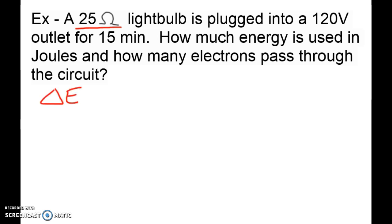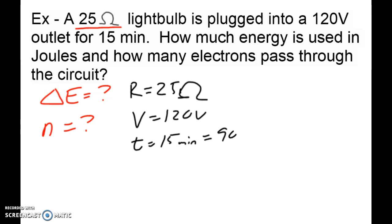If we're looking for energy, that's going to be one of our question marks. And if we're looking for the number of electrons, that's going to be another equation. So let's see what we do know. We do know that our resistance in this case is 25 ohms. We know our voltage here is 120 volts. And we know our time here is 15 minutes. Now we don't work with minutes. We work in seconds. So it's going to be 900 seconds.